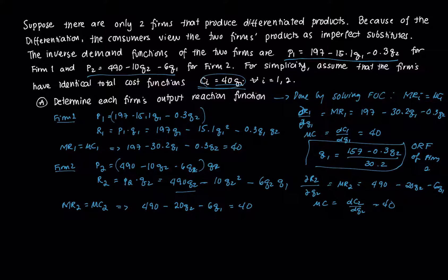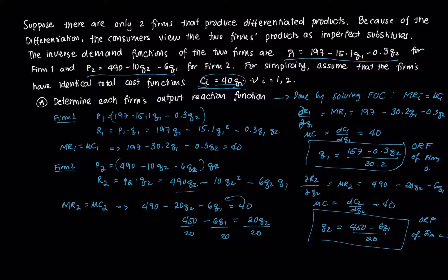We can isolate everything with respect to Q2. That's 20Q2 equals 450 minus 6Q1. Then divide both sides by 20. I get Q2 equals (450 minus 6Q1) all over 20. This is the ORF or output reaction function of firm 2.